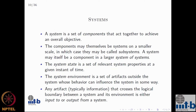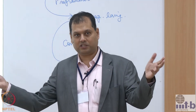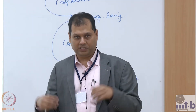Briefly, to touch on what a system is: a system is a set of components that come together to achieve some overall objective. The system itself can have smaller subsystems inside it, or it may be part of a larger system — a system of systems. For example, a transportation system has different vehicles — buses, cabs — which are components in that larger system.